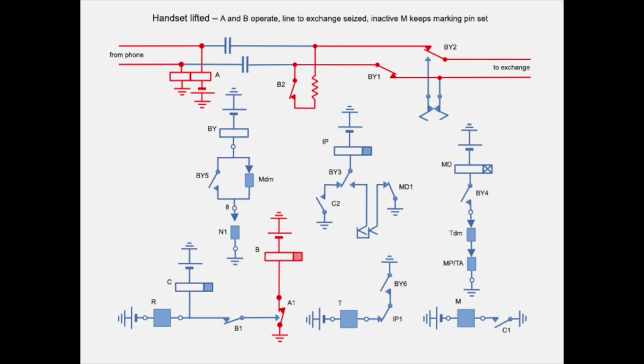Let's follow the operation when we dial a number. I have marked in red which parts are active or where the current flows. The incoming line is connected to double relay A. The loop is closed when the caller lifts the handset. Relay A operates and closes contact A1.